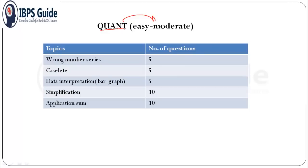For quant, quant was also of easy to moderate level. One important thing to note is that they introduced wrong number series. In the previous three shifts they asked missing, but in this shift they introduced wrong number series - five questions.